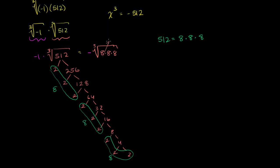So the answer, this part right over here, is just going to simplify to 8. And so our answer to this, the cube root of negative 512, is negative 8, and we are done.